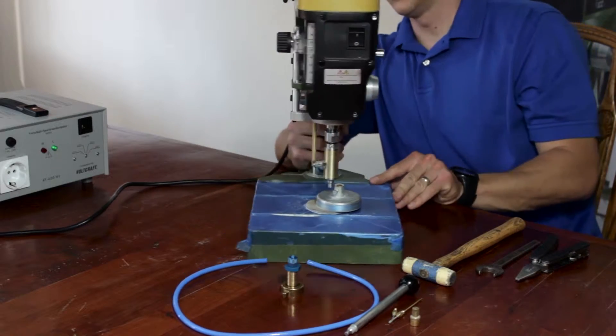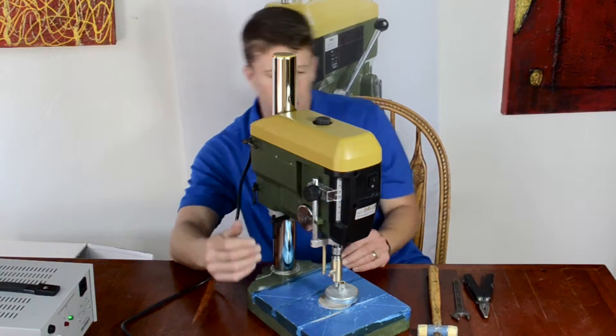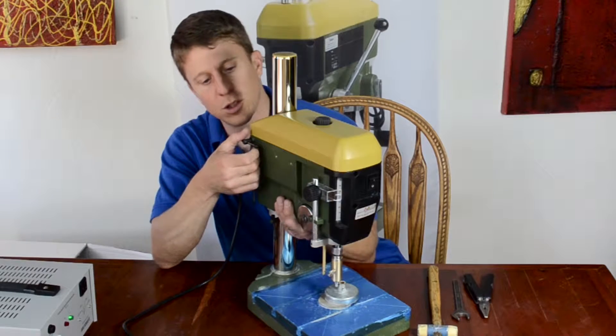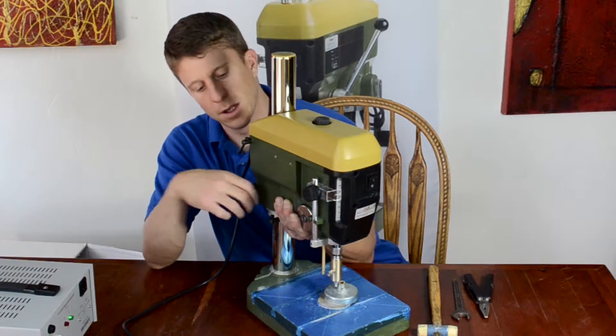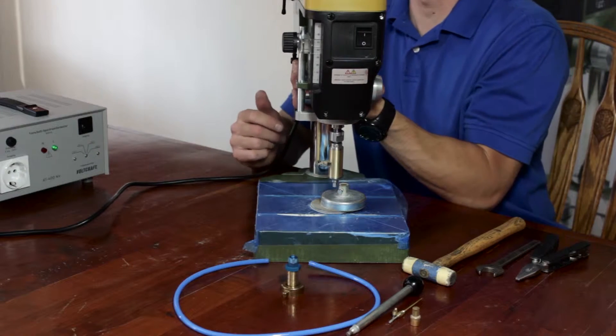The first thing you need to do is identify the three hand bolts on the side. You're going to want to first loosen the top bolt and then the bottom, and it's important to hold the head of the drill press while you're loosening these bolts.